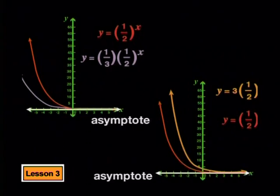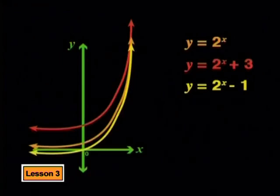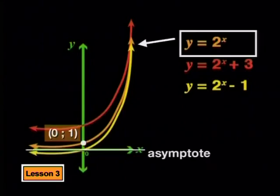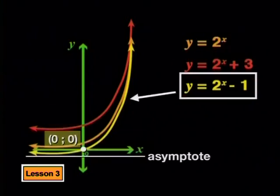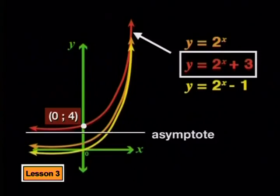When we changed the a value, the y-intercept was affected but the asymptote was not. When we change the q value, it shifts the whole graph q units up or down. The y-intercept shifts q units up or down from the point 0,1. The change in q also affects the asymptote — the new asymptote lies on the line where y equals the q value.